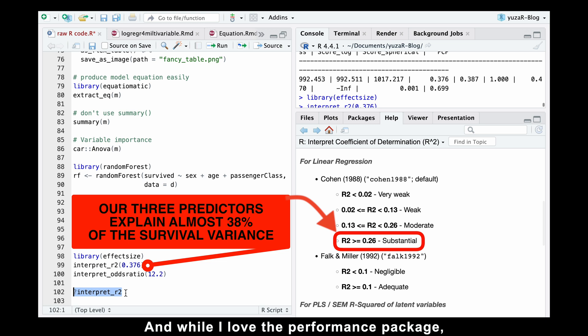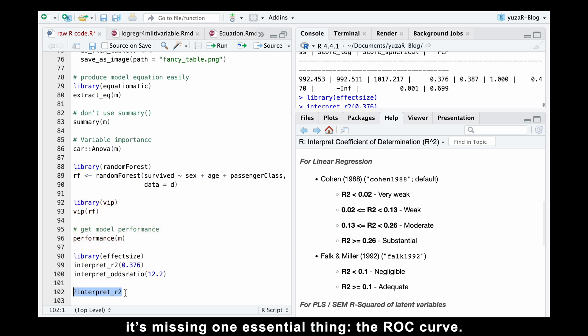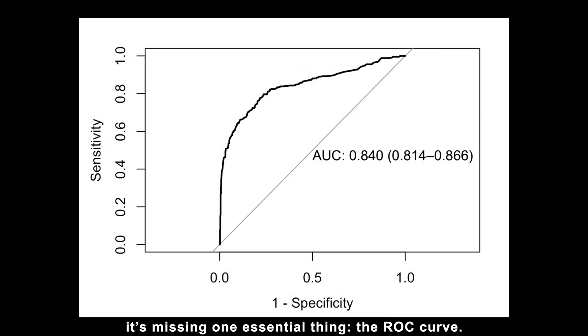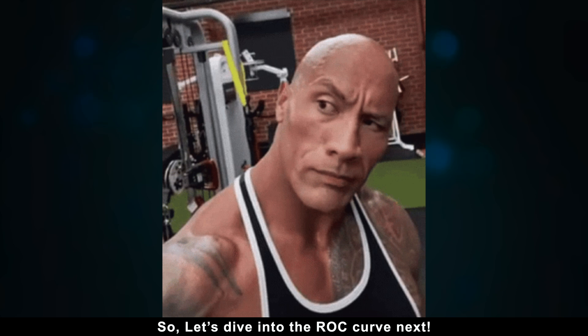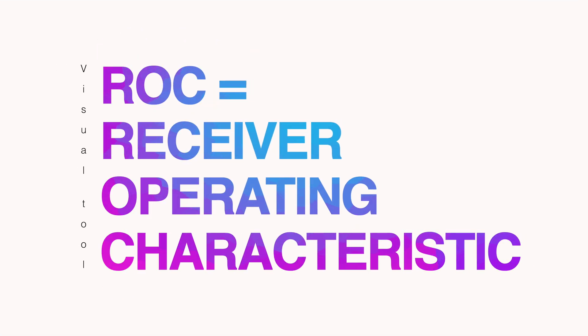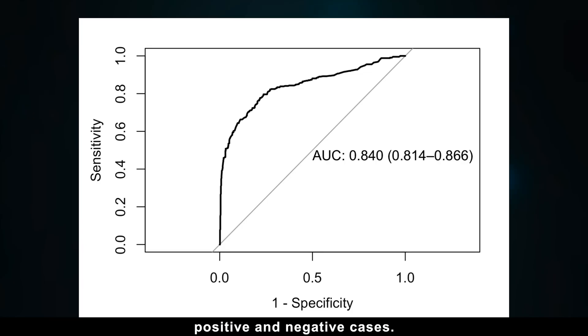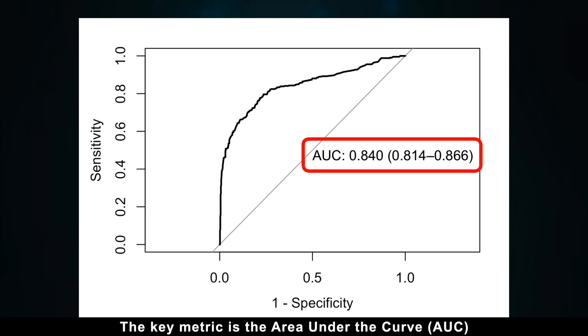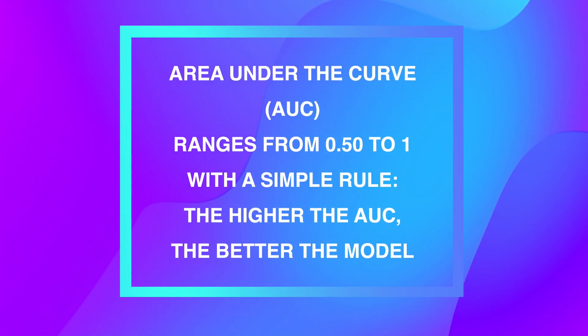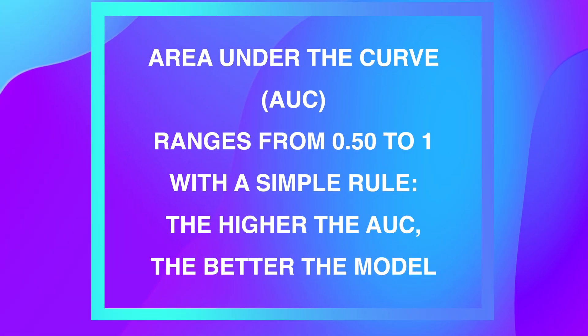And while I love the performance package, it's missing one essential thing. The ROC curve. So let's dive into the ROC curve next. The receiver operating characteristic is a visual tool which shows how well your model can distinguish between positive and negative cases. The key metric is the area under the curve, AUC, which ranges from 0.5 to 1 with a simple rule. The higher the AUC, the better the model.